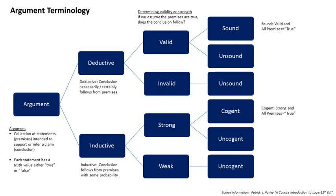A causal inference draws a conclusion about a causal connection based on the conditions of the occurrence of an effect. Premises about the correlation of two things can indicate a causal relationship between them, but additional factors must be confirmed to establish the exact form of the causal relationship.